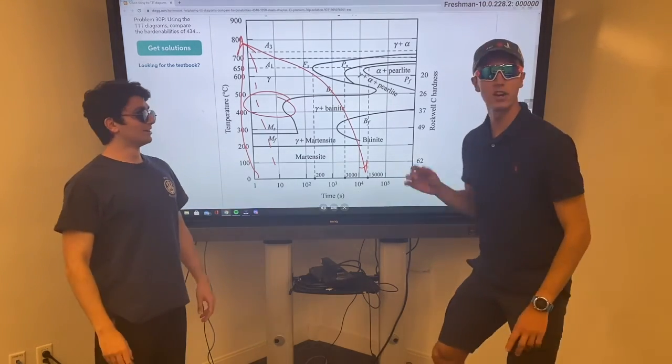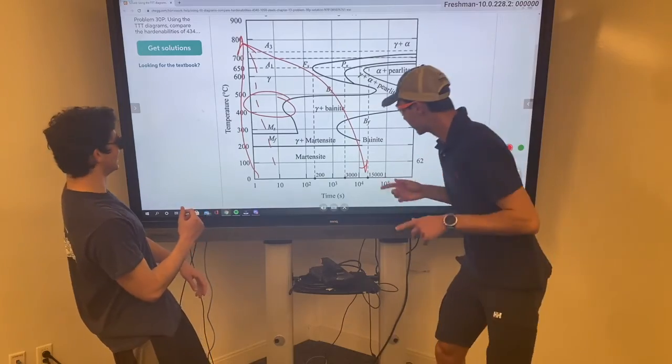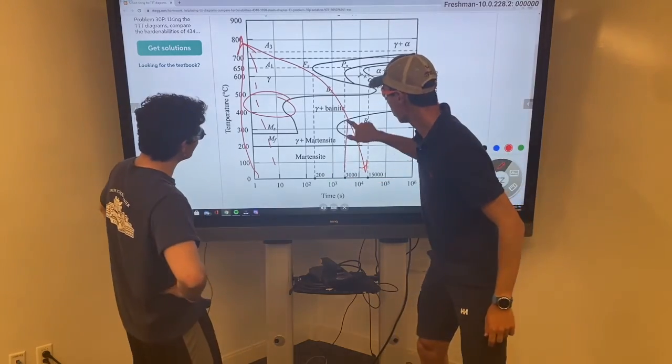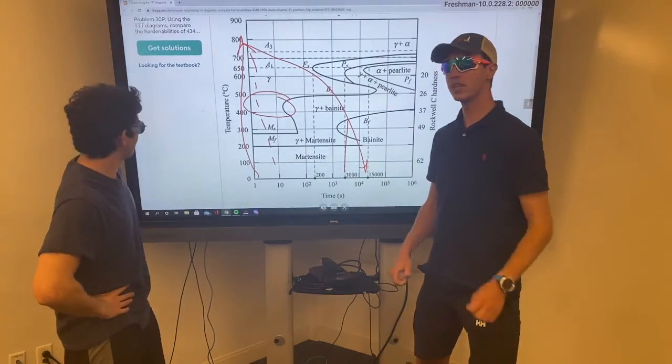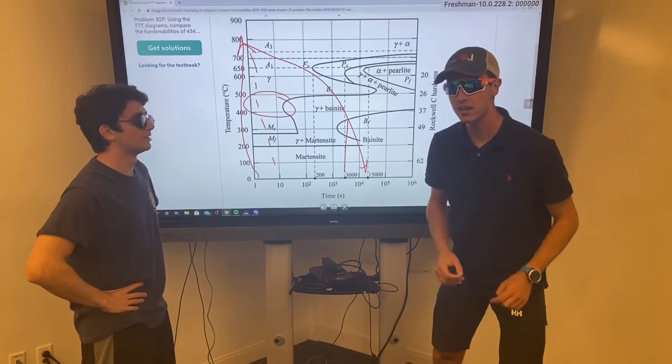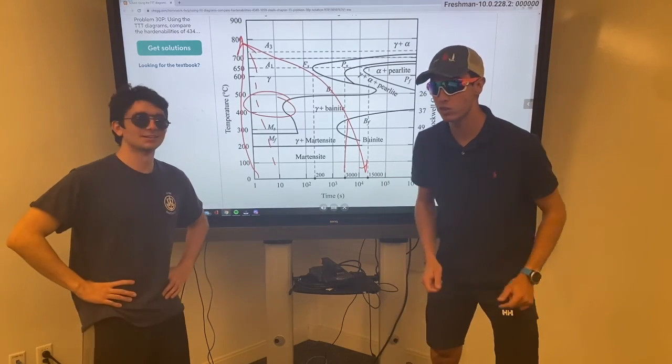But wait! There's more. By post-tempering the steel to about 300 to 400 Celsius, we can decompose much of the martensite to form a tougher microstructure.